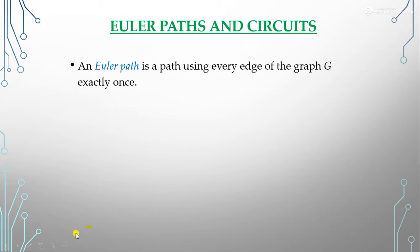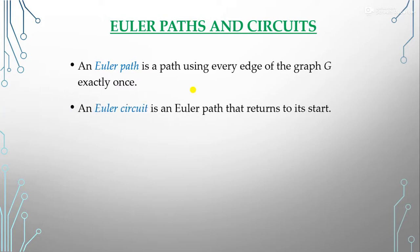An Euler path is a path that uses every edge of the graph G exactly once — edges should not be repeated. An Euler circuit is an Euler path that returns to its start, meaning if we begin at some vertex and cover all edges, we return to the starting vertex.